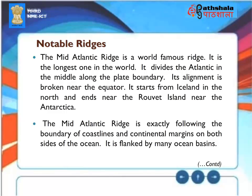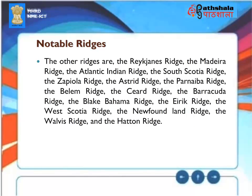Notable Ridges: The Mid-Atlantic Ridge is the longest in the world, dividing the Atlantic along the plate boundary from Iceland in the north to Bouvet Island near Antarctica. It is flanked by many ocean basins. Other notable ridges include the Reykjanes Ridge, Madeira Ridge, Atlantic-Indian Ridge, South Scotia Ridge, Zapiola Ridge, Astrid Ridge, Parnaiba Ridge, Belem Ridge, Seared Ridge, Barracuda Ridge, Blake Bahama Ridge, Eirik Ridge, West Scotia Ridge, Newfoundland Ridge, Walvis Ridge, and the Hatton Ridge.